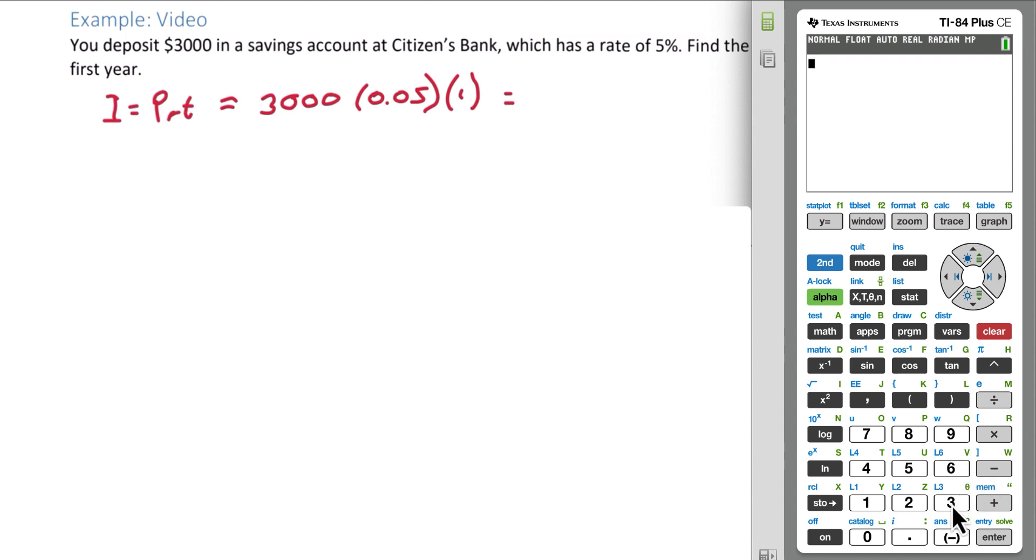Plugging this into the calculator we get $3,000 times .05 times 1, $150. So the interest at the end of the first year is $150.